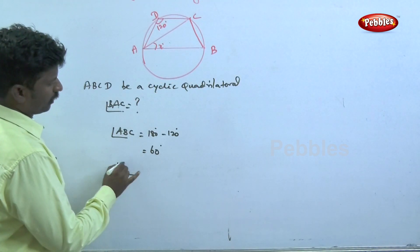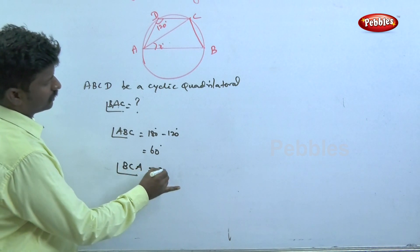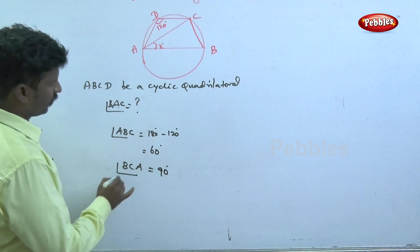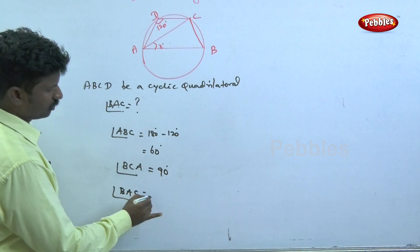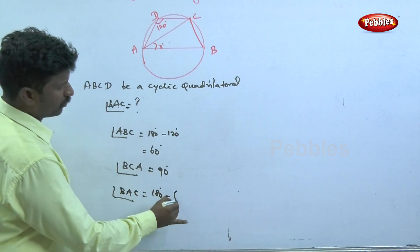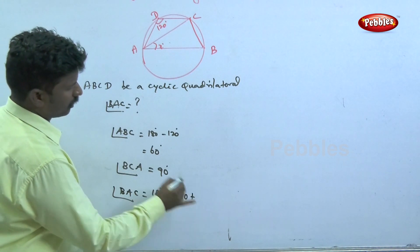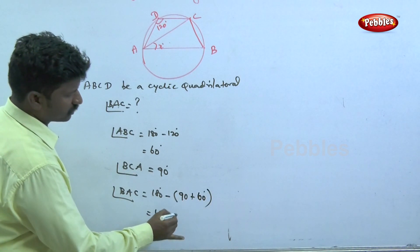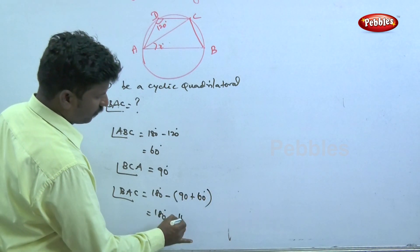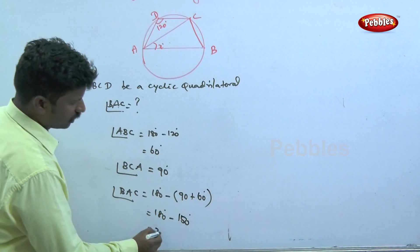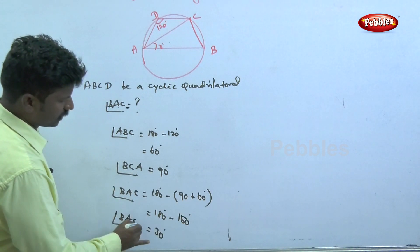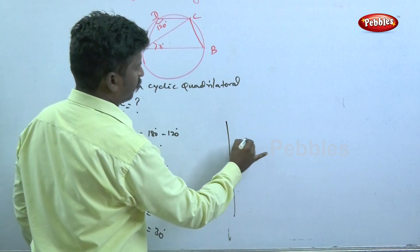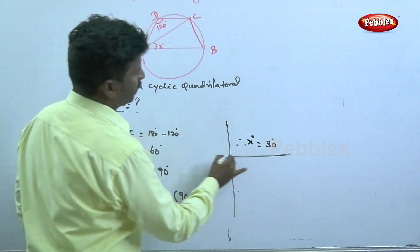The angle BCA is equal to 90 degrees. Then, angle BAC is equal to 180 degrees minus 90 degrees plus angle ABC of 60 degrees, giving 180 minus 150 equals 30 degrees. Therefore, angle X is equal to 30 degrees.